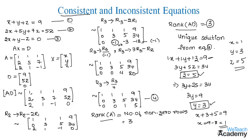To verify, substitute all values into equation 1 and confirm the result equals 9. In this way, we find the elements of matrix X using the concept of rank and consistent/inconsistent systems. Note: if rank(A) = rank([A|D]) < 3 (e.g., equal to 2), the system is consistent but has infinitely many solutions expressed in terms of a parameter k. If rank(A) ≠ rank([A|D]), the system is inconsistent and has no solutions.